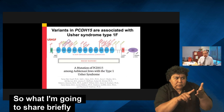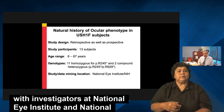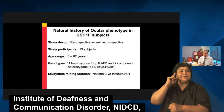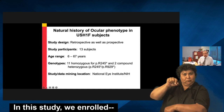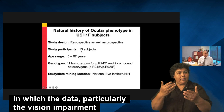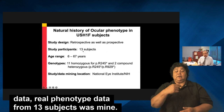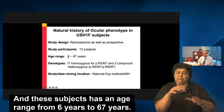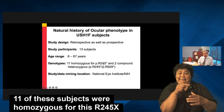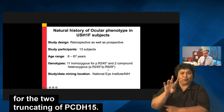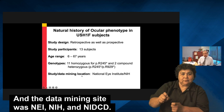What I'm going to share briefly is a study we did in collaboration with investigators at the National Eye Institute and the National Institute on Deafness and Other Communication Disorders, NIDCD, at NIH in Bethesda, Maryland. In this retrospective and prospective study, we analyzed visual impairment phenotype data from 13 subjects with an age range of 60 to 67 years. Eleven subjects were homozygous for the R245X variant, and two were compound heterozygous for two truncating alleles of PCDH15. The data mining sites were NEI and NIDCD, NIH.